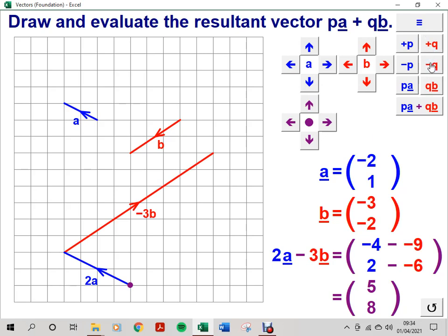Note, if it were 3B and not minus 3B, it would be going in this direction, southwest. But because it's minus 3B, it goes in the opposite direction, northeast, as shown.